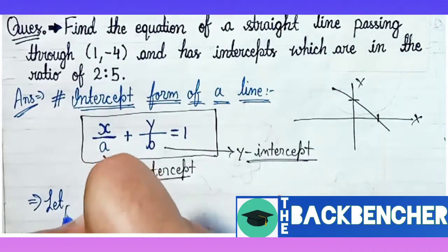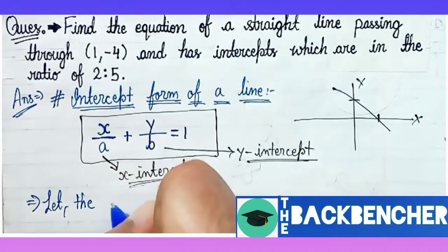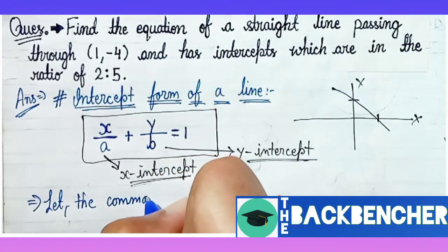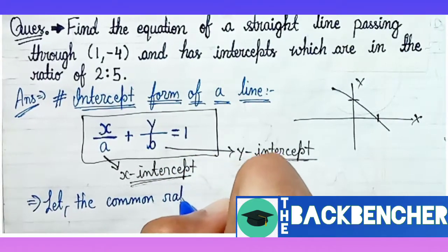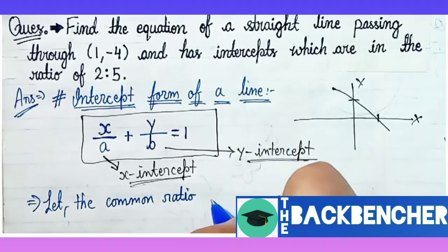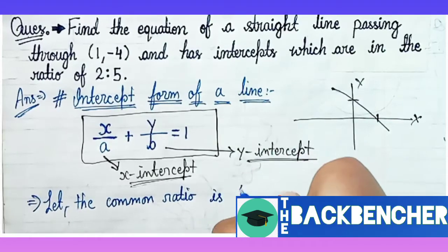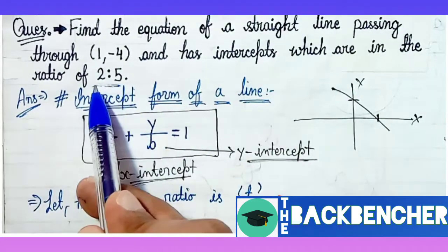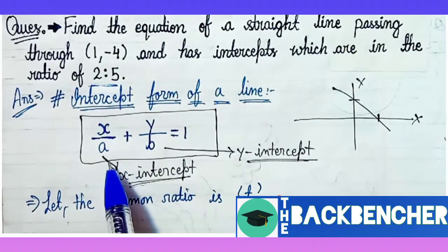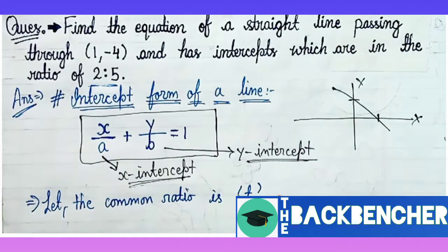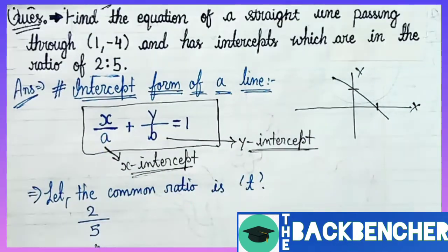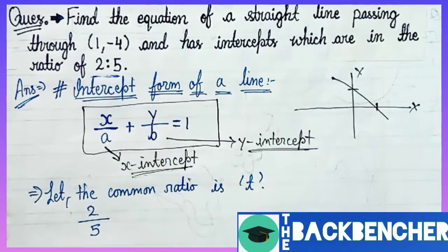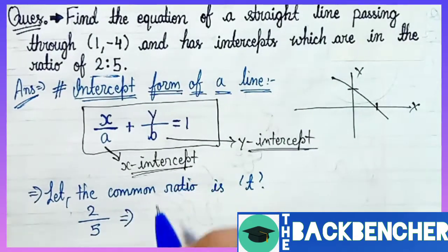In this question, the intercepts have the ratio of 2:5. First of all, we will assume that the common ratio of both intercepts equals t. We are assuming that the common ratio between them is t. They already gave us that the intercepts are in the ratio 2:5, so we assume common ratio as t. If 2/5 is the given ratio and the common ratio is t, then what is a?